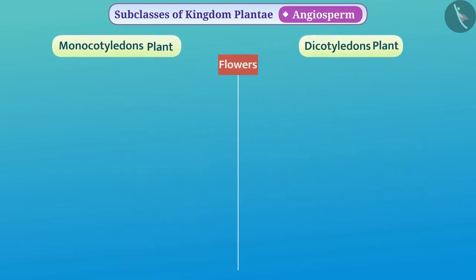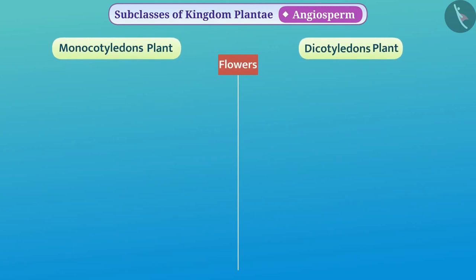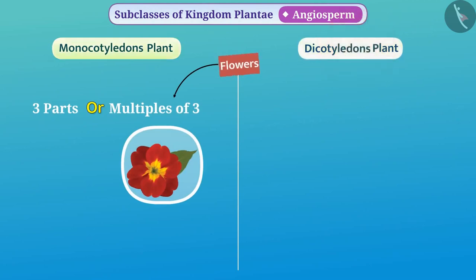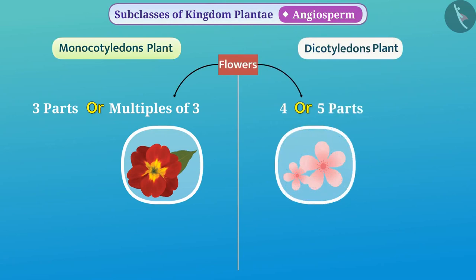Flowers of both types of plants are also different. In monocot plants, flowers are in three parts or multiples of three, whereas in dicotyledon plants, flowers are in four or five parts. So you must have understood gymnosperms and angiosperms very well. Today we have learnt about the subclasses of kingdom Plantae — gymnosperms and angiosperms.